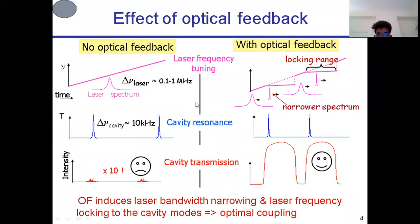What are the effects of optical feedback? There are many effects in optical feedback: non-optical feedback and with optical feedback. When we are checking with no optical feedback, the time taken and the laser spectrum will be in a straight graph with 0.11 megahertz. The laser frequency tuning will be high and the cavity resonance will be in the 10 kilowatt form. The cavity transmission will be into 10 times.